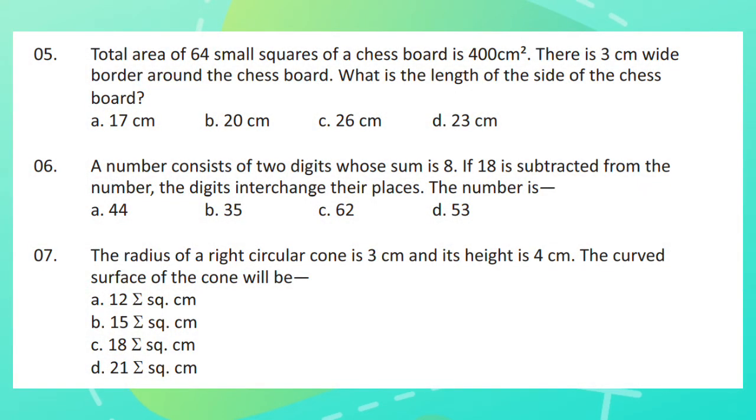Question 5. Total area of 64 small squares of a chess board is 400 cm square. There is 3 cm wide border around the chess board. What is the length of the side of the chess board?